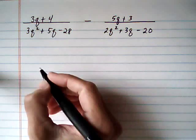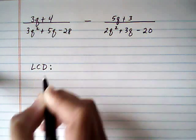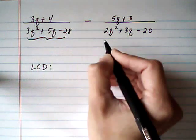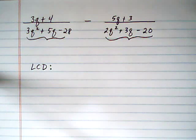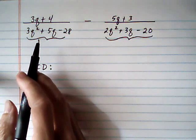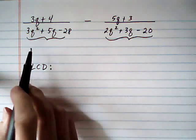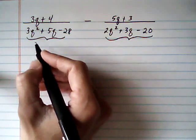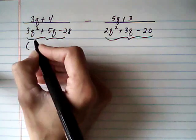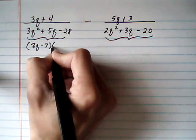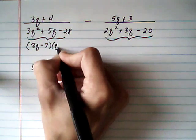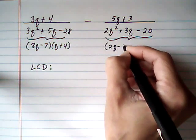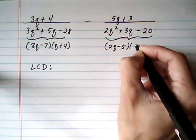So to build the LCD, the first thing we need to do is factor the denominators that we have and figure out what the pieces of the LCD are. Now, if you're rusty on factoring trinomials, you're going to want to watch the videos on factoring trinomials. Otherwise, this type of problem is going to be a real mess. So this thing factors out to be 3q minus 7 times q plus 4, and the second one factors out to be 2q minus 5 times q plus 4.